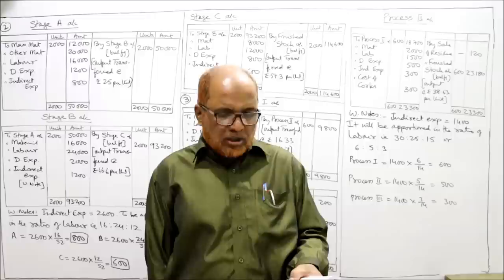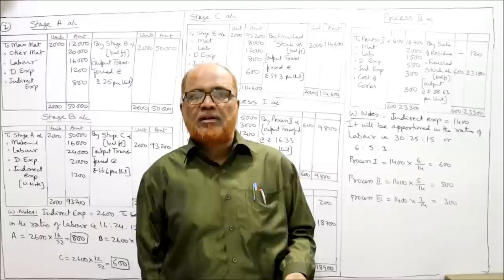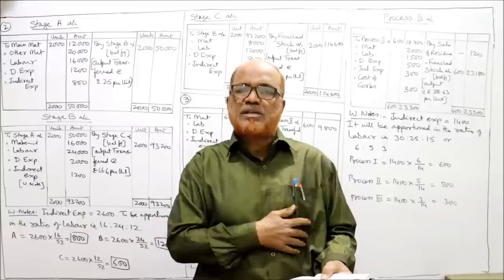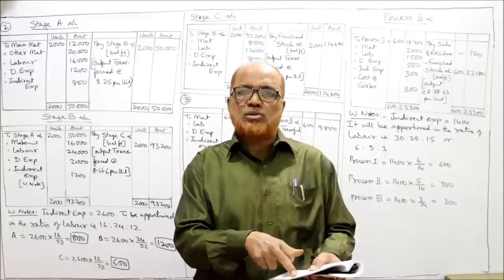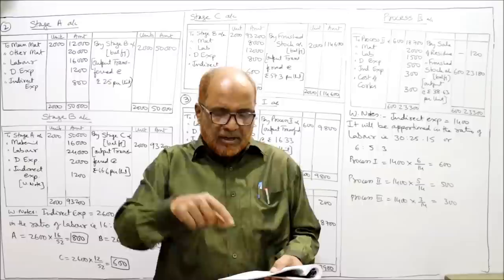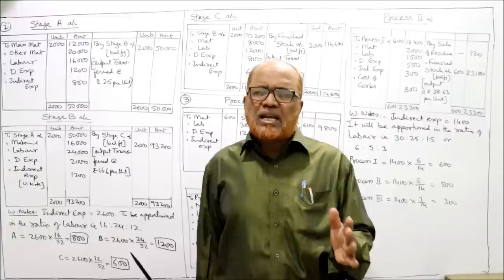Working note — apportioning indirect expenses of 2,600 in the ratio of labour: 16,000 : 24,000 : 12,000 = 16 : 24 : 12. Dividing by common factor gives ratio 16 : 24 : 12, total = 52. Stage A: 2,600 × 16/52 = 800. Stage B: 2,600 × 24/52 = 1,200. Stage C: 2,600 × 12/52 = 600. Also, main raw material issued to Stage A besides the above is 12,000 rupees — so Stage A has two material items: main material 12,000 and other material 20,000.